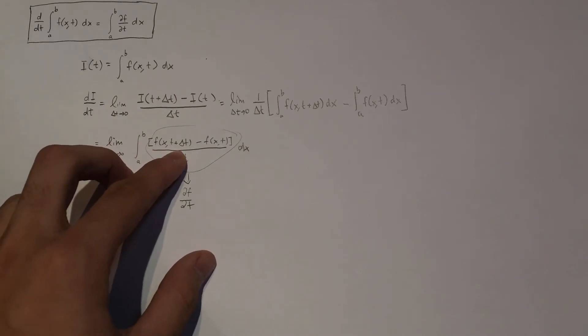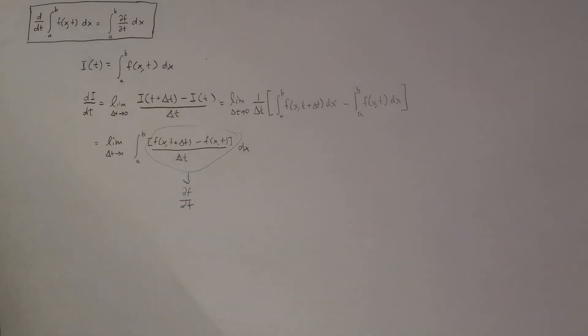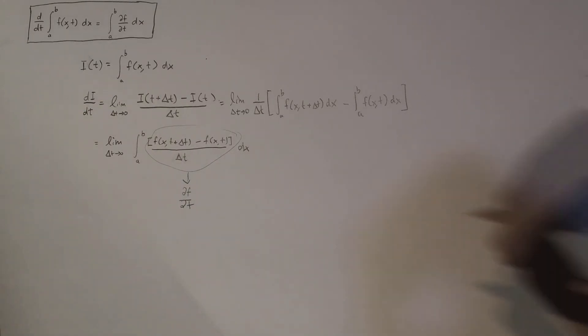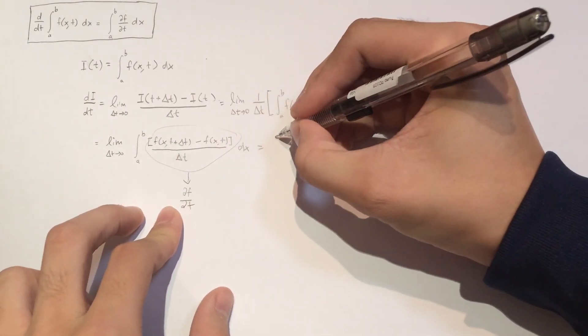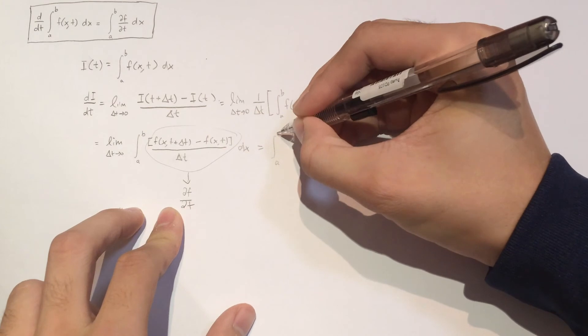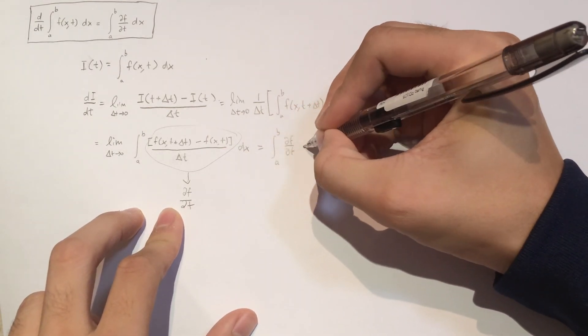And so ultimately, this is just dF/dT, and so then, this is just going to be the integral from A to B of dF over dT, DX.